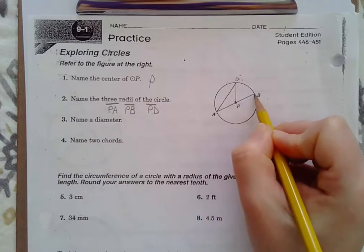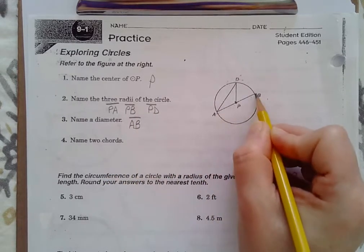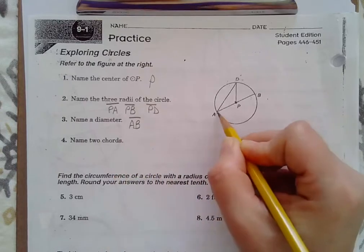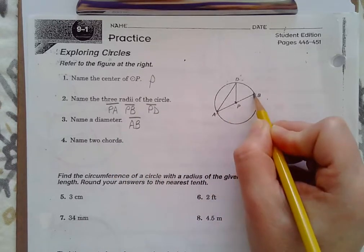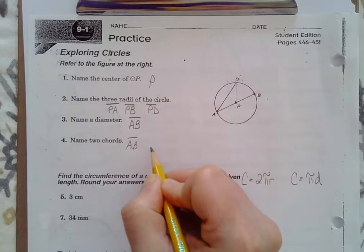Name a diameter. It goes through the center. That's AB. Two chords. Well, remember, a diameter is a chord by definition. Its end points are on the circle. And the other chord is this one here, AD.